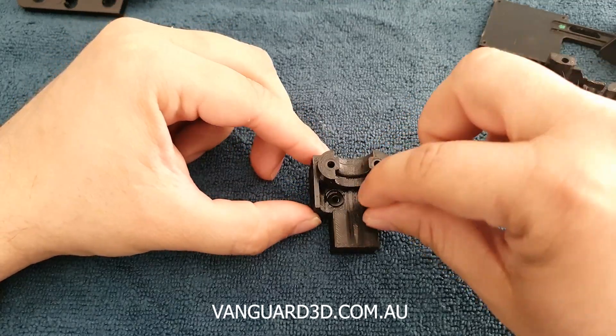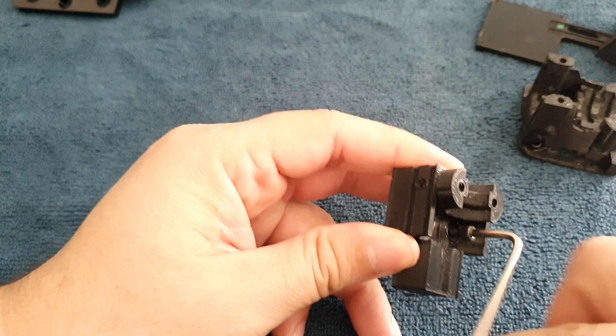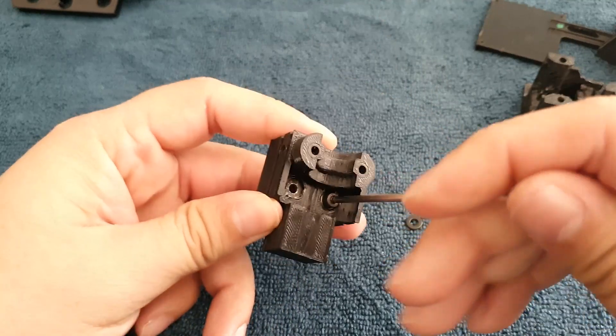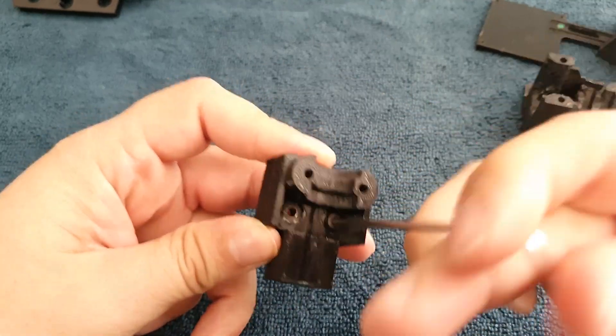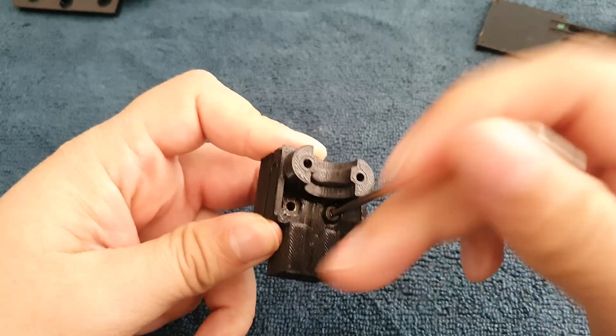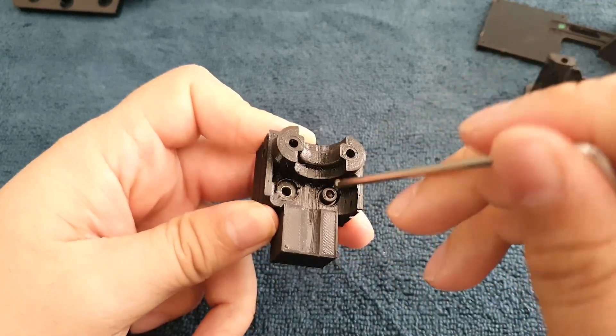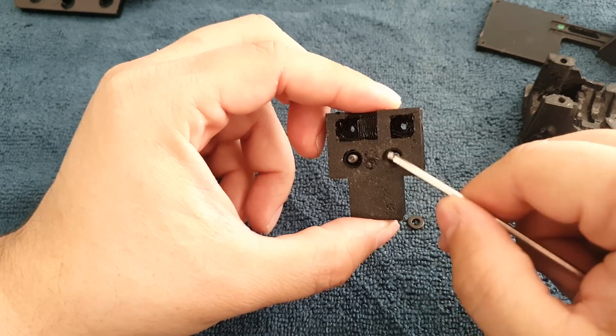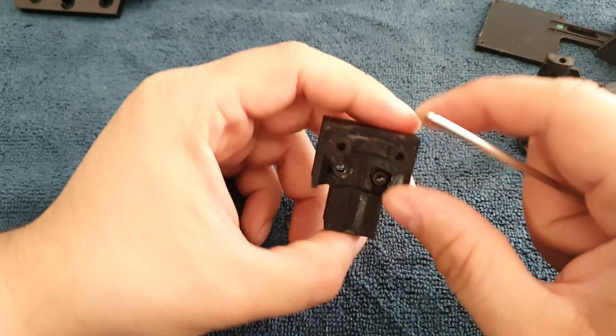So basically you can just screw it in there. It's always best to pre-install the screws, make sure the head is obviously flush, and that's how it's going to fit to the back plate of the printer.